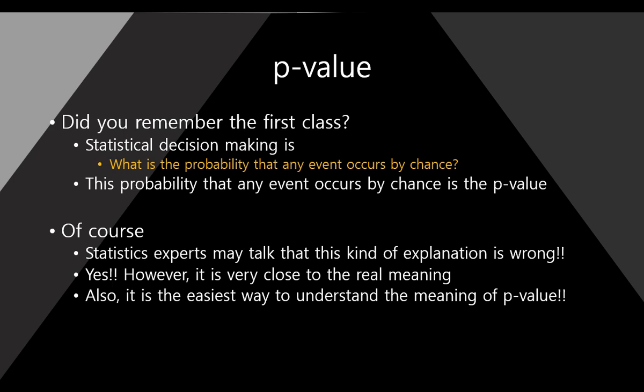This probability — that any event occurs by chance — is the p-value. The meaning is: the probability that any event occurs by chance is the p-value.